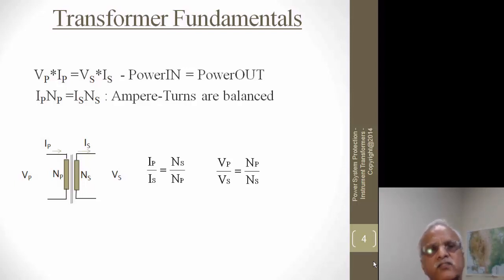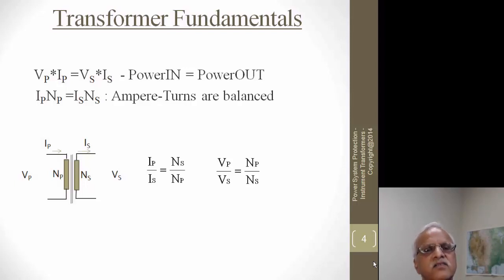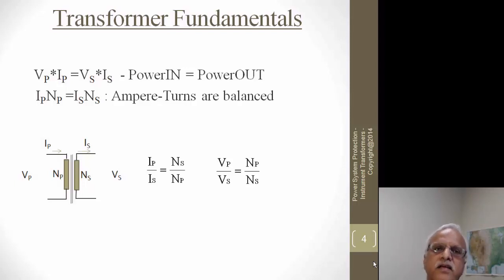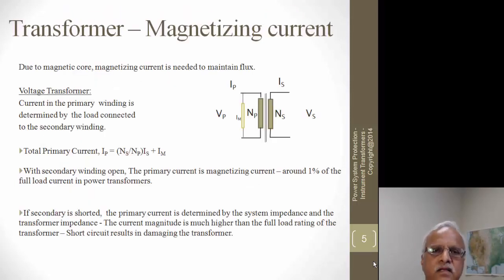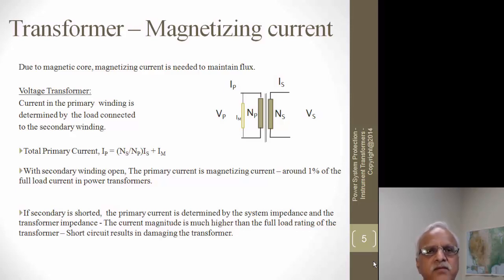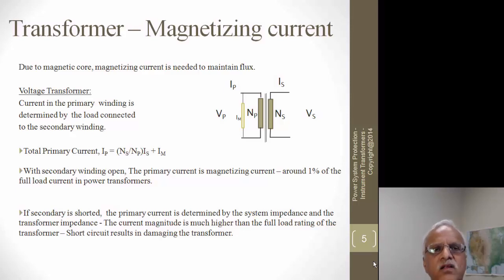From those relationships, the voltage ratio from primary to secondary is the same as the turns ratio NP to NS, whereas the current ratio is the inverse: IP divided by IS equals NS divided by NP. Because a magnetic core links the two windings, some energy and current are needed to maintain the flux linkage — this is called the magnetizing current.